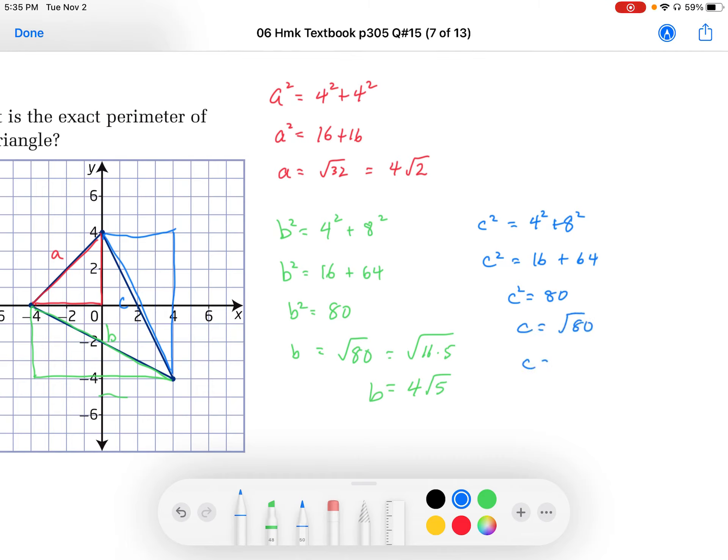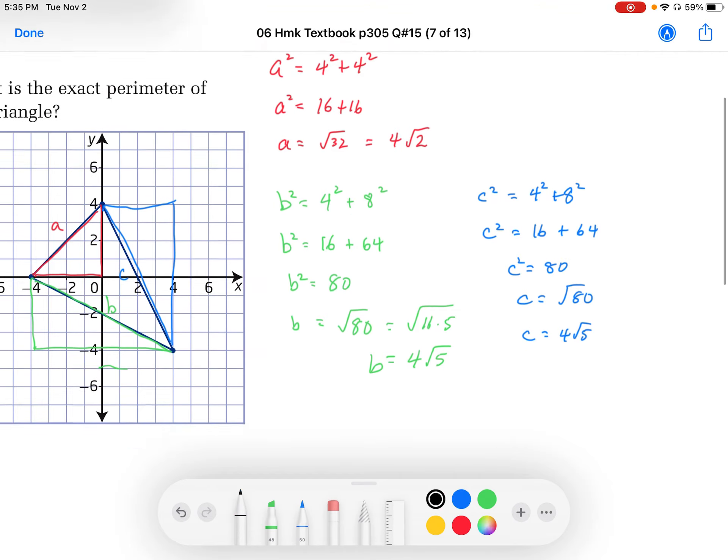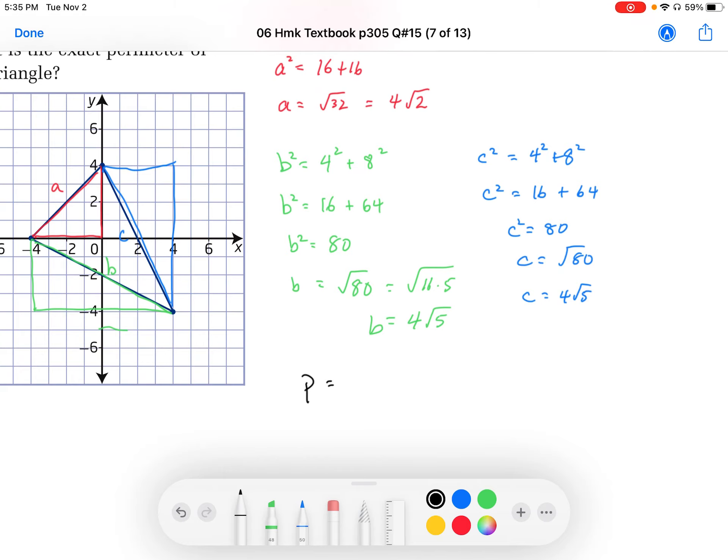And that simplifies to, again, 4 root 5. So the total perimeter, when we work out the total perimeter, the perimeter is equal to 4 root 2. We're going to add the 4 root 5 together. So we're going to end up with, since they're like radicals, we're going to end up with 8 root 5 as its exact perimeter.